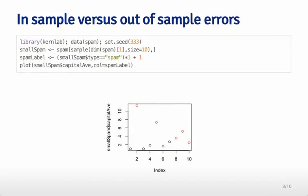Just to show you a really simple example, I thought I'd show you in-sample versus out-of-sample errors with a trivial example. I've gone to the Kern Lab package, and I looked at the spam data set. Remember that was data set where we collected information about spam messages, or messages from robots, and hand messages, messages we actually care about. What I do is I take a very small sample of that spam data set, just 10 messages.